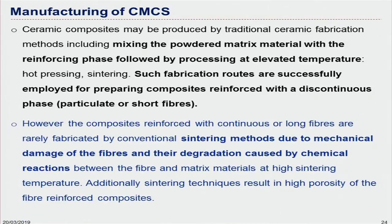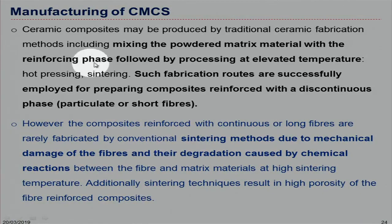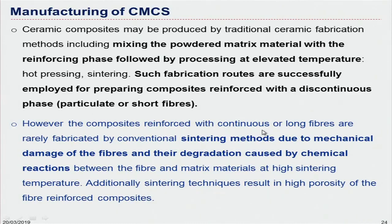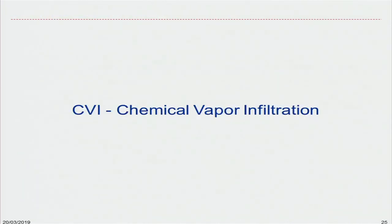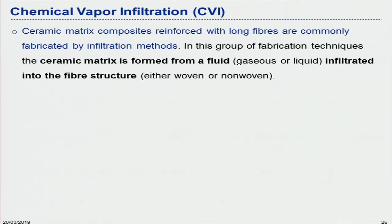For the sintering method, we start from powder — the ceramic powder that is the matrix material — mix it, then apply high temperature to form a solid object. This is really good with short fibers or particles, but for long fibers, because of the high temperature involvement, sintering processes are not suitable for long fiber CMCs. Now let's look at CVI — chemical vapor infiltration.